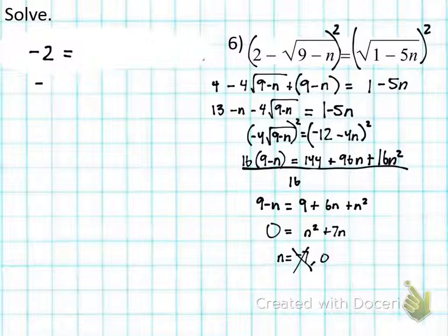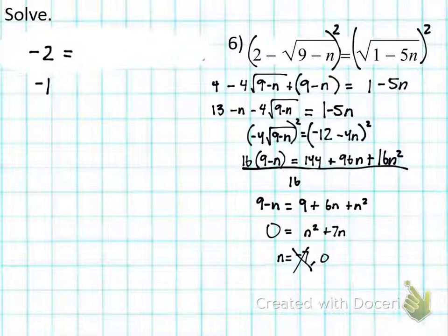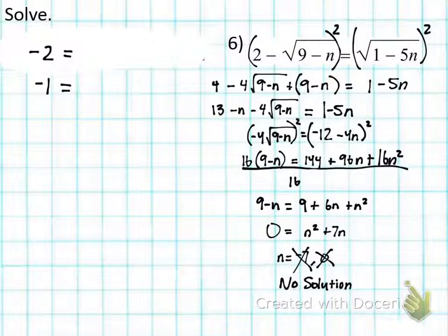Now let's put in n = 0: √(9 − 0) = √9 = 3; 2 − 3 = −1. Can the square root of something equal −1? No. So n = 0 is also an extraneous solution. Are there any valid solutions? No — the answer is no solution. You did all that work just to say there aren't any answers. That's why you always have to check.